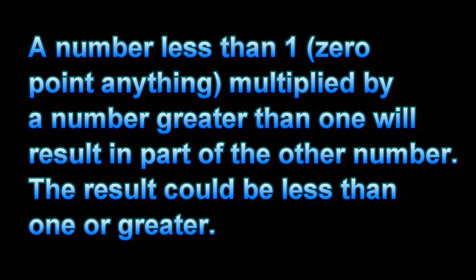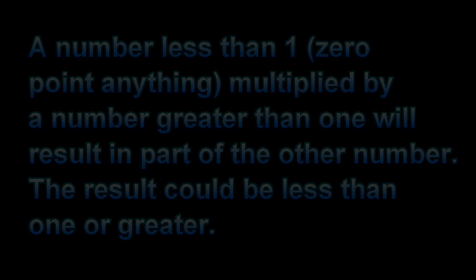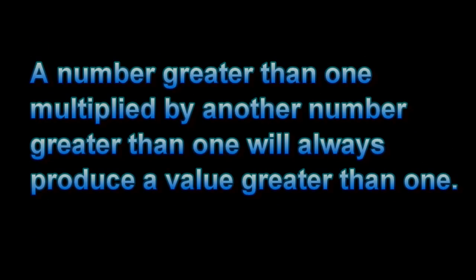If you are multiplying a value less than one by something greater than one, that means you are going to be shading part of something that is greater than one. When multiplying two values that are greater than one, that just means you're going to end up with more than what you started with—you are not going to shade part of anything, you're just going to add on to what you already have.